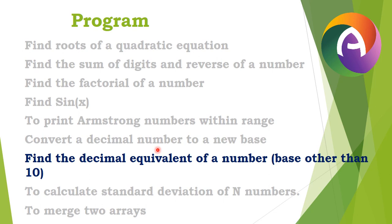What number system do we have? Base 5 is a decimal number. Base 11 is a decimal number. Base 36 is also a decimal number. The number system is the decimal number system. That's the program.